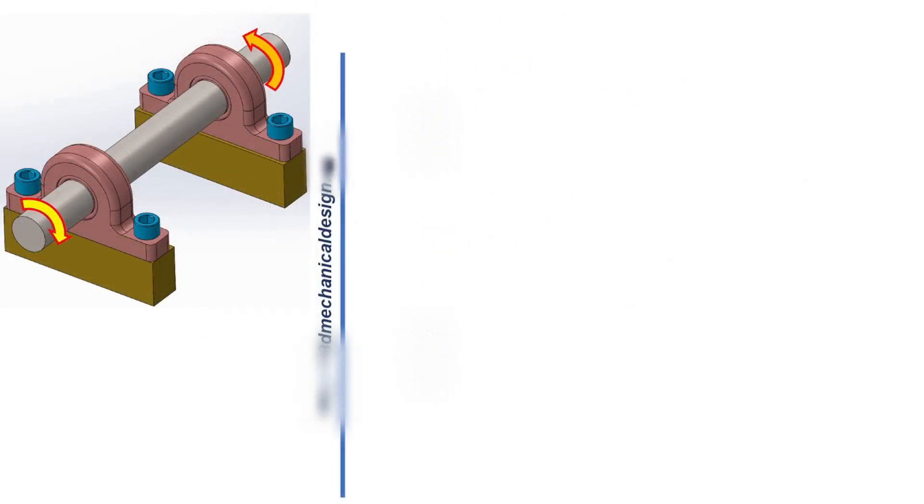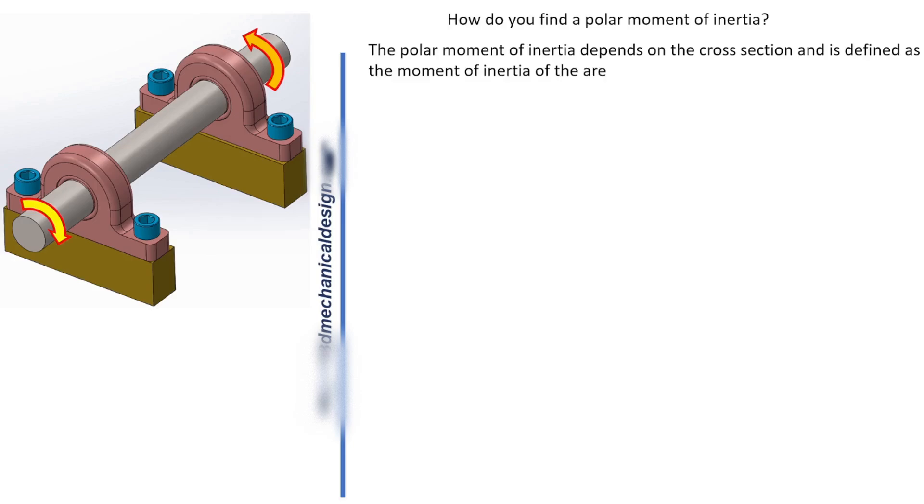How do you find polar moment of inertia? The polar moment of inertia depends on the cross section and is defined as the moment of inertia of the area about an axis perpendicular to the plane of the figure and passing through the center of gravity of the area.